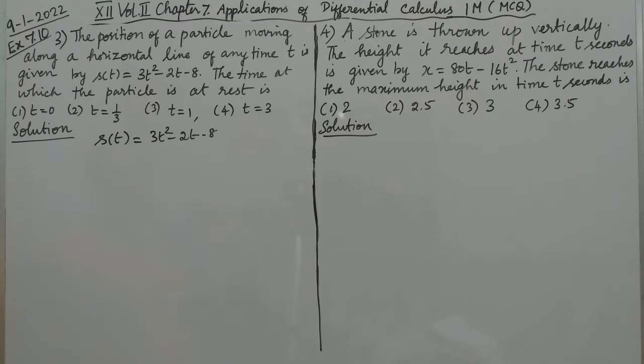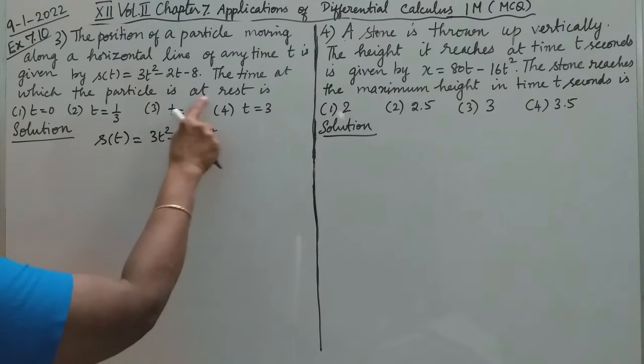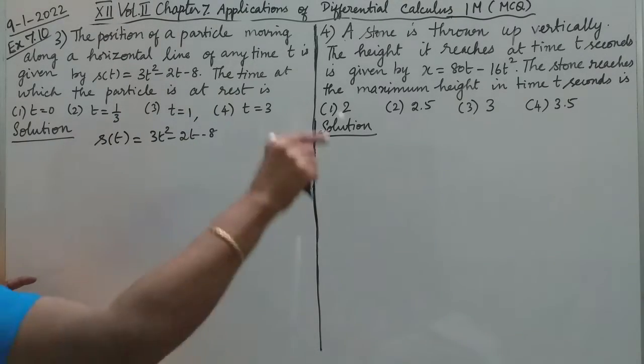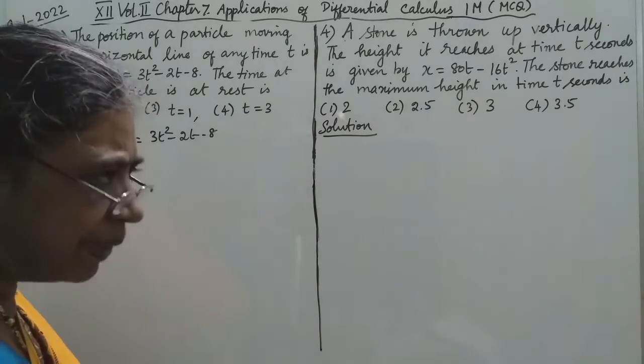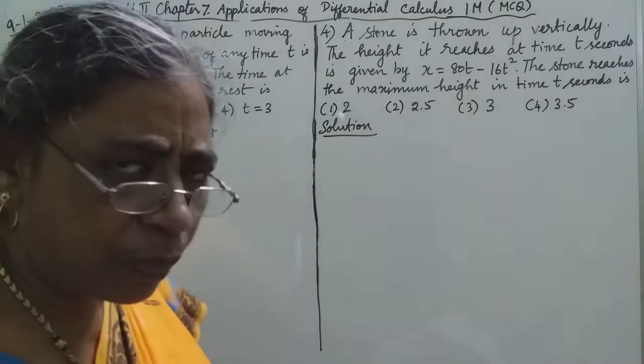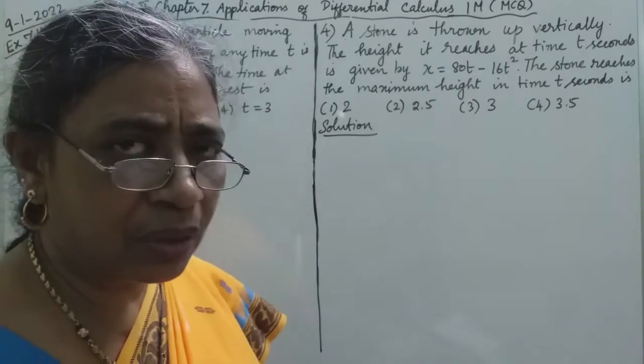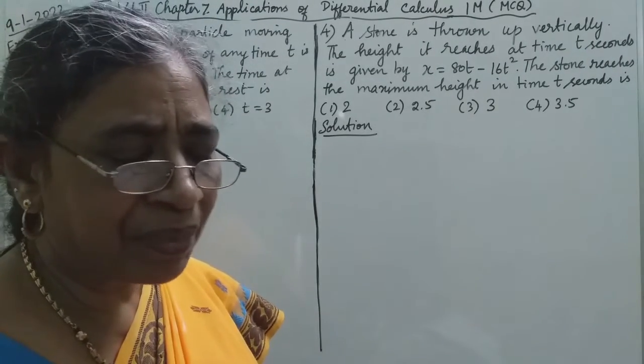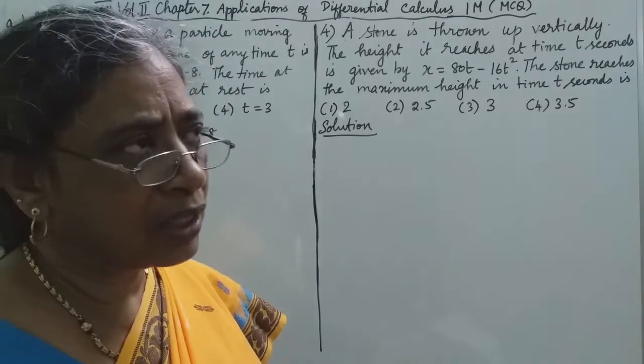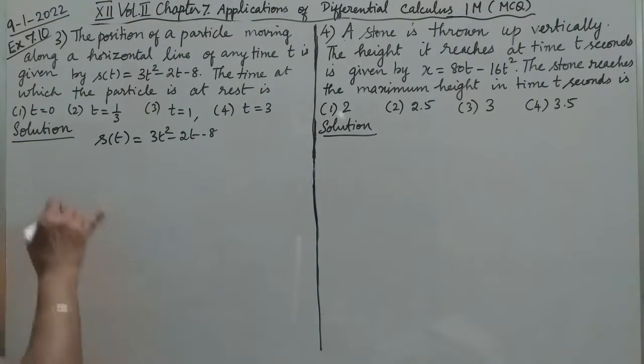When a particle moves along a horizontal line, the position is given in terms of time. To find when the particle is at rest, we need to consider that when it's at rest, there is no speed. When the velocity vanishes, that is the time we're looking for.